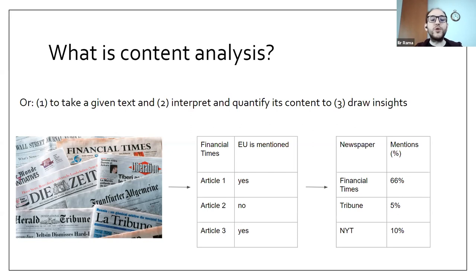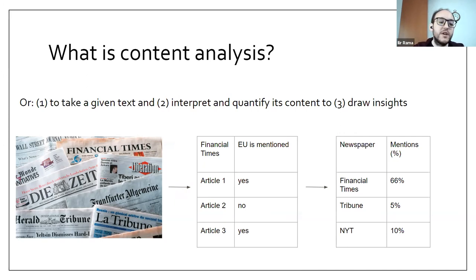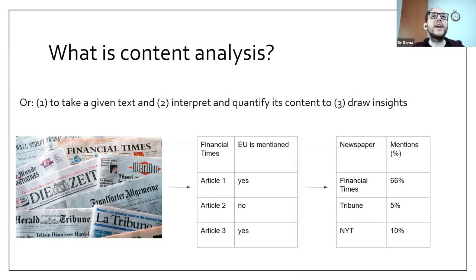We take issues from a specific month, go through all the articles, and every time the European Union or Europe is mentioned we write 'yes,' otherwise 'no.' After coding every article, we get useful data: for example, the Financial Times mentions the European Union in 66% of articles compared to 10% for the New York Times. By extracting specific data, we can derive insights — such as a ranking of how Europe-centric a newspaper is.